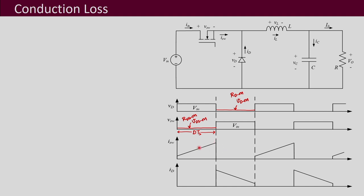This is the switch current; when the switch does not conduct it is 0. In reality there will be some small leakage current but it is usually so small that we can ignore it for loss calculation purposes. And this is the diode current — when the diode is not conducting it is 0, and when the diode conducts this is the current that flows through it.